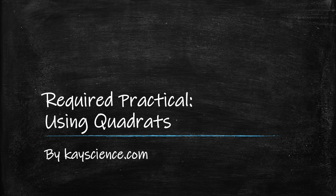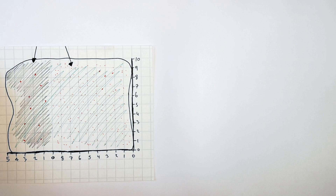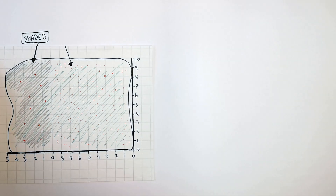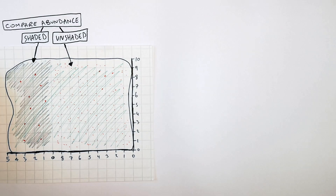This video covers using quadrats, a required practical by KScience.com. Quadrats can be used to compare the abundance of plants in a field — for example, comparing the abundance of plants in a shaded area compared to an unshaded area.